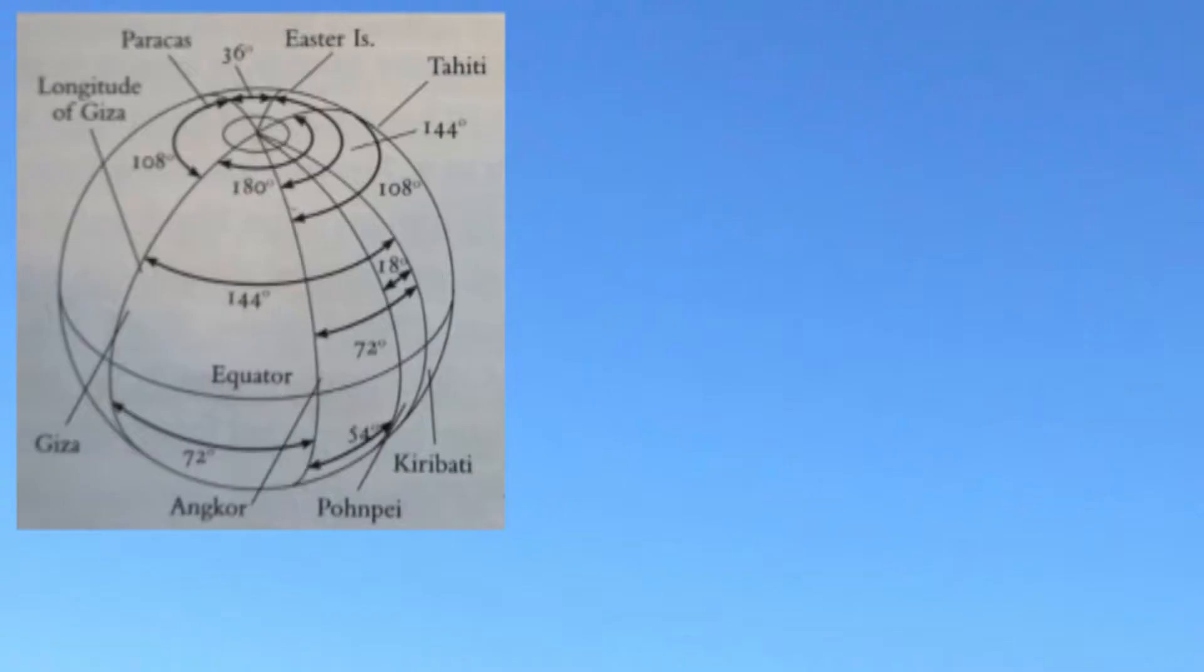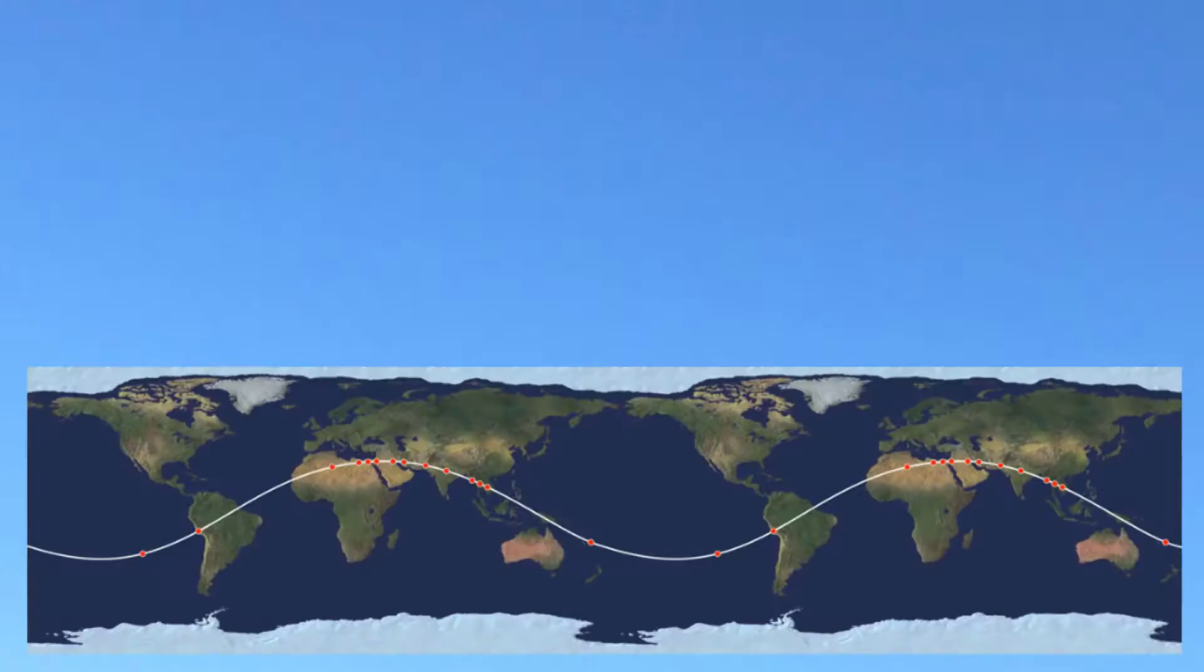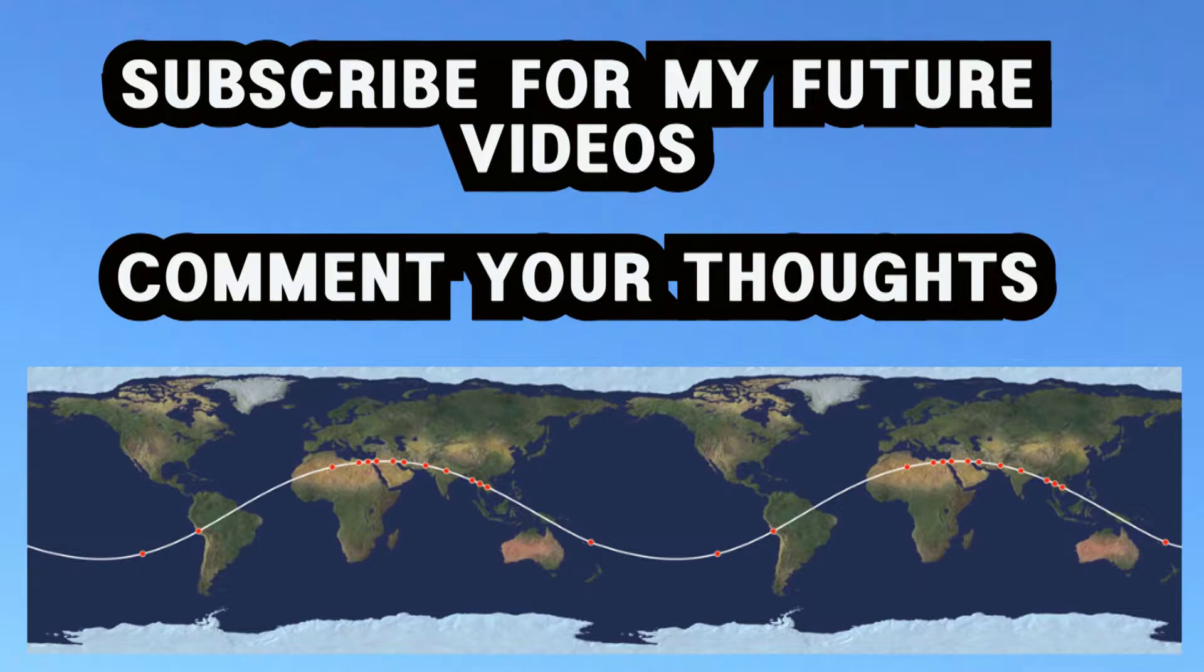There are other connections around the world indicating the existence of an ancient world grid using the numbers of precession as a marker. If we apply this ancient world grid to center on Egypt, there are numerous ancient monuments worldwide that can be connected using the numbers of precession. But that's for another video as the evidence is quite extensive.